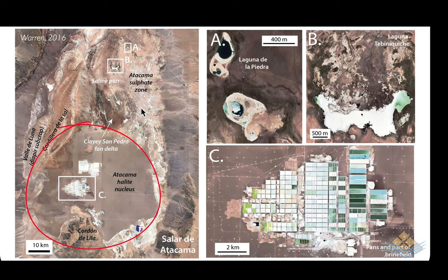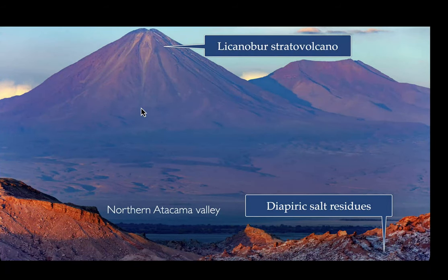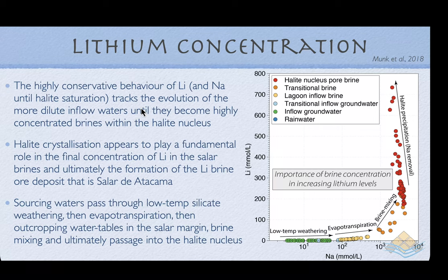The most saline brines are captured in the halite nucleus facies, and sitting atop that halite nucleus facies we have a series of brine fields and concentrator pans where lithium brines are concentrated by solar evaporation. At the northern end of Salar de Atacama we can see the two main feeder sources: the stratovolcanoes — including La Canaboa at the northern end — and on the western margin, the diapyric salt residues and ridges of the Cordillera de la Sal.